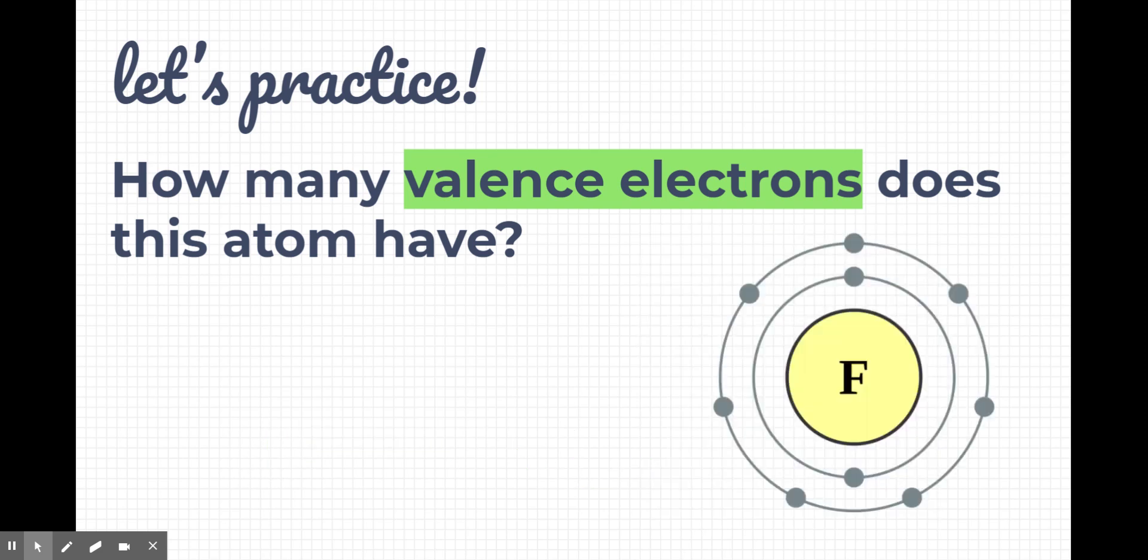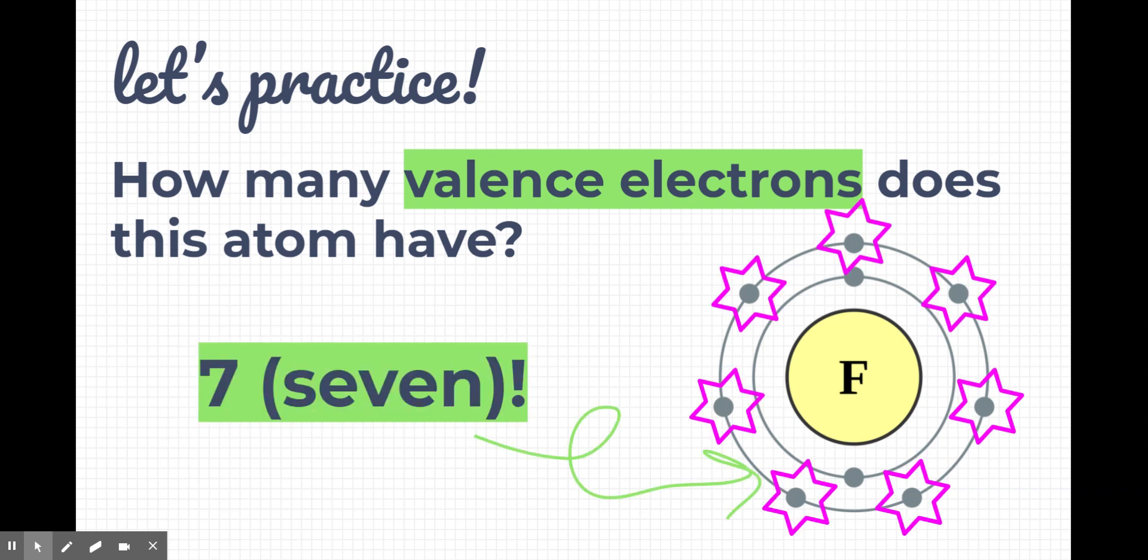How many valence electrons does this atom have? If you said seven, you got it right again. Of the nine electrons that this atom, chlorine, has, seven of them are valence because seven of them are in the outermost energy level.